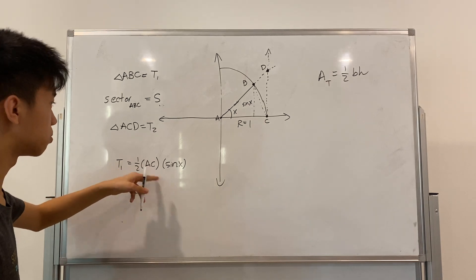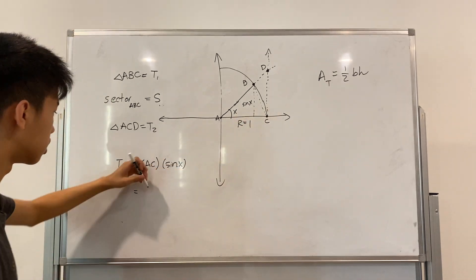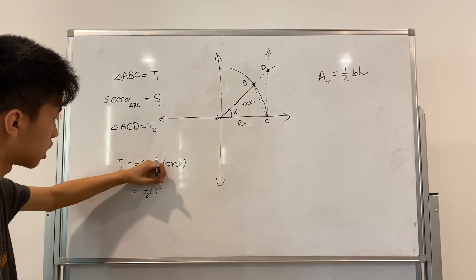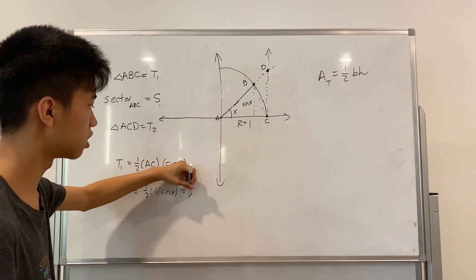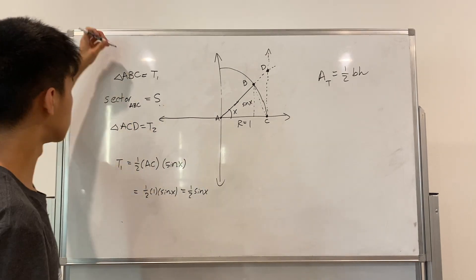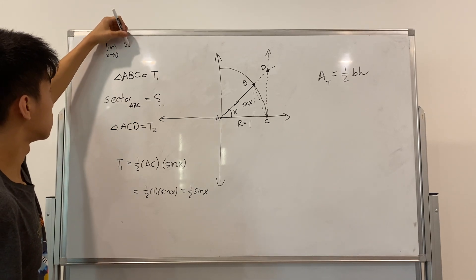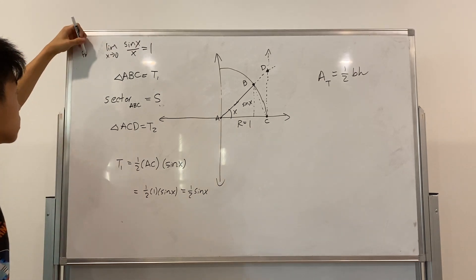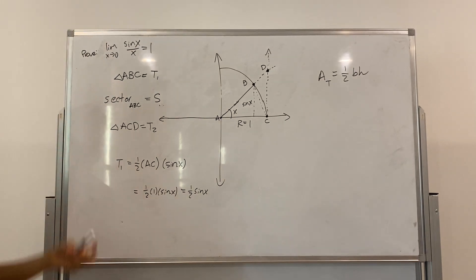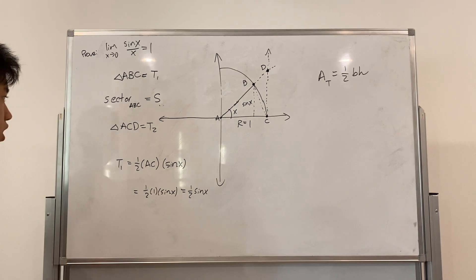You multiply, or you sub in one for AC, because the radius of the circle is one, just one half times one times sine of X. I know this seems completely unrelated to our original problem, which is proving this limit. We're trying to prove this, but just bear with me, we'll get to a good result eventually. So, T1 is equal to half sine of X.